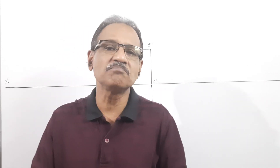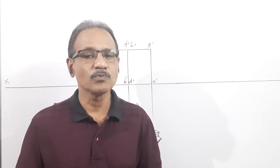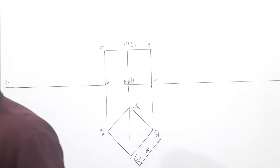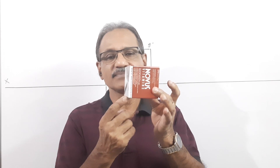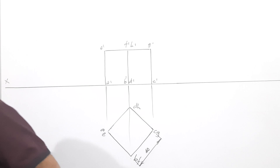A cube is a square prism whose height is equal to the side. So for a cube 40 mm, the sides are 40, the base is 40 mm, the top is 40 mm, and the height is also 40 mm. How many square faces? One, two on top and bottom, then four on the sides — total six square faces. That's a cube.